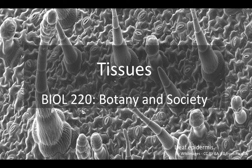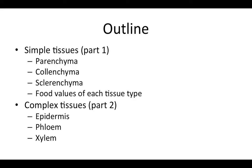This lecture focuses on plant tissues. What you see in the background of this title slide is the epidermis of a leaf, and we will talk about epidermal tissue in a little bit. Before we start, I will go over an outline of what we'll talk about. The first half of this lecture will focus on simple tissues. These are going to be parenchyma, collenchyma, and sclerenchyma, and we will say what each of those are as we go.